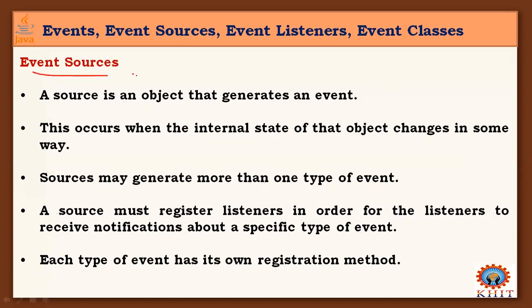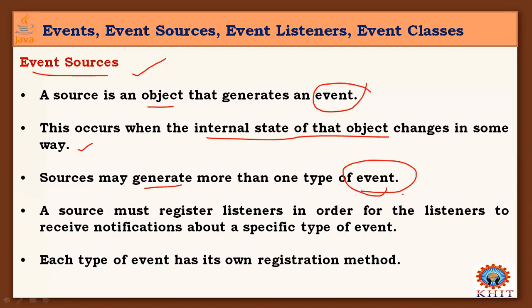Coming to event sources: a source is an object that generates an event. This occurs when the internal state of an object changes in some way. Sources may generate more than one type of event. A source must register listeners in order for listeners to receive notification about a specific type of event. Each type of event has its own registration method, and there is a specific process for each individual event.